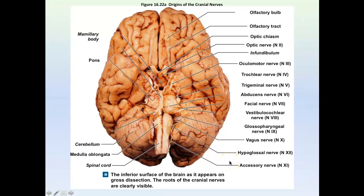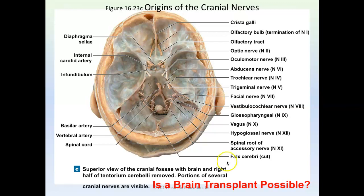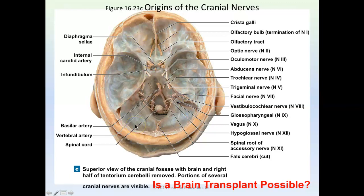Here's a thought experiment: is a brain transplant possible? If you were to take out someone's brain, you would have to sever all 24 cranial nerves, sever the spinal cord, sever very large blood vessels that feed the brain, and sever the infundibulum that holds the pituitary gland in place — so you'd lose the pituitary gland. You'd have to reattach all those nerve fibers in another skull, which I think is essentially impossible. Head transplants are actually considered easier than brain transplants for this reason.